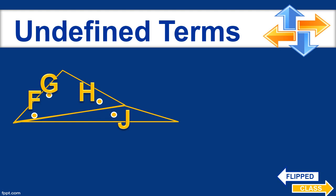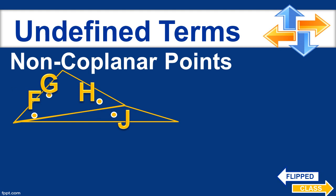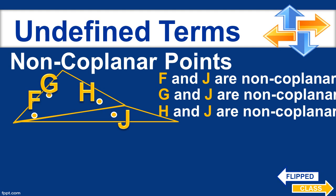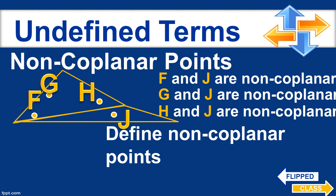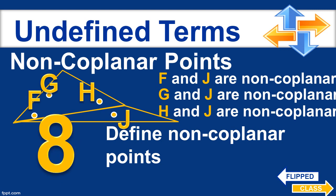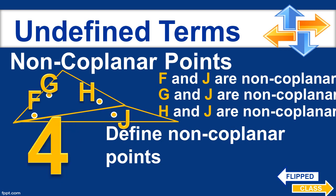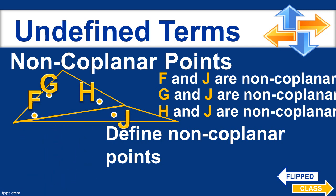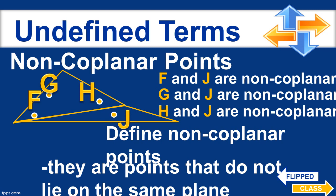If we have coplanar points, we can also describe non-coplanar points. In the given figure, points F and J are non-coplanar, G and J are non-coplanar, and H and J are also non-coplanar. Non-coplanar points are points that do not lie on the same plane.